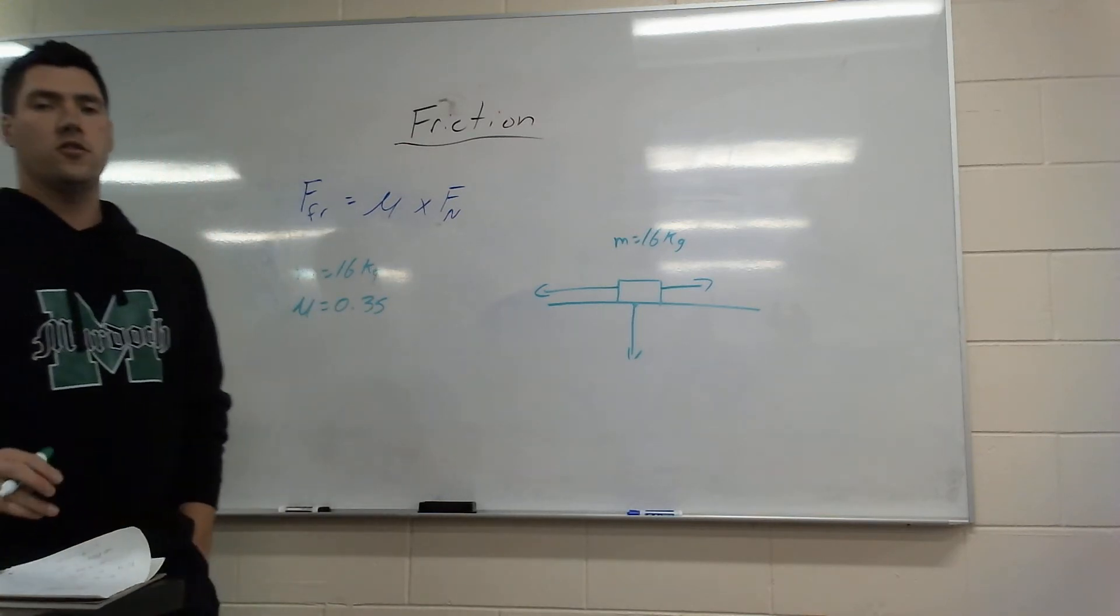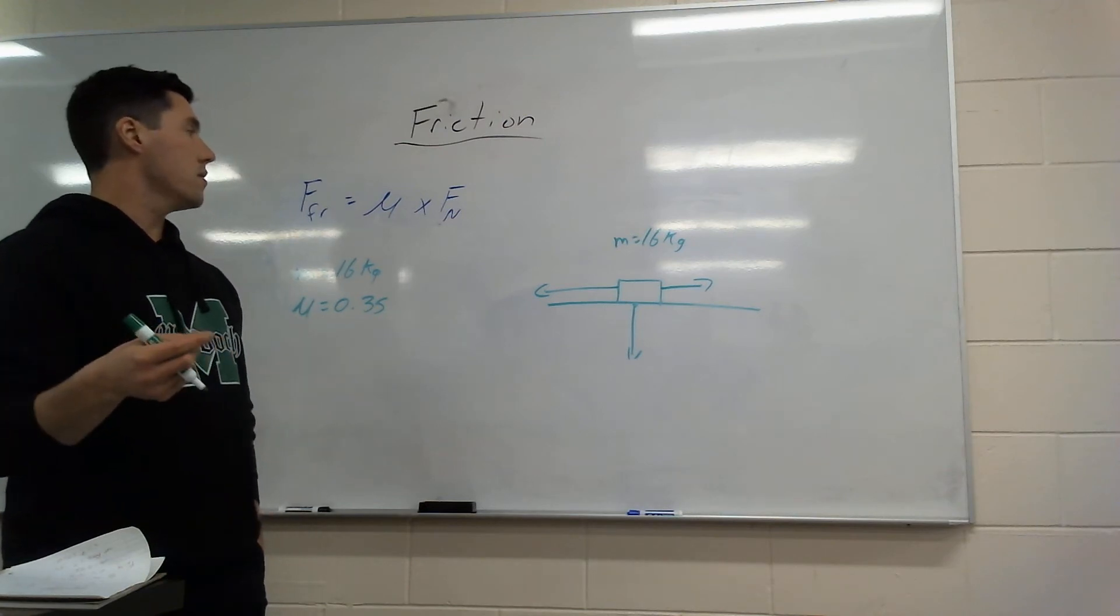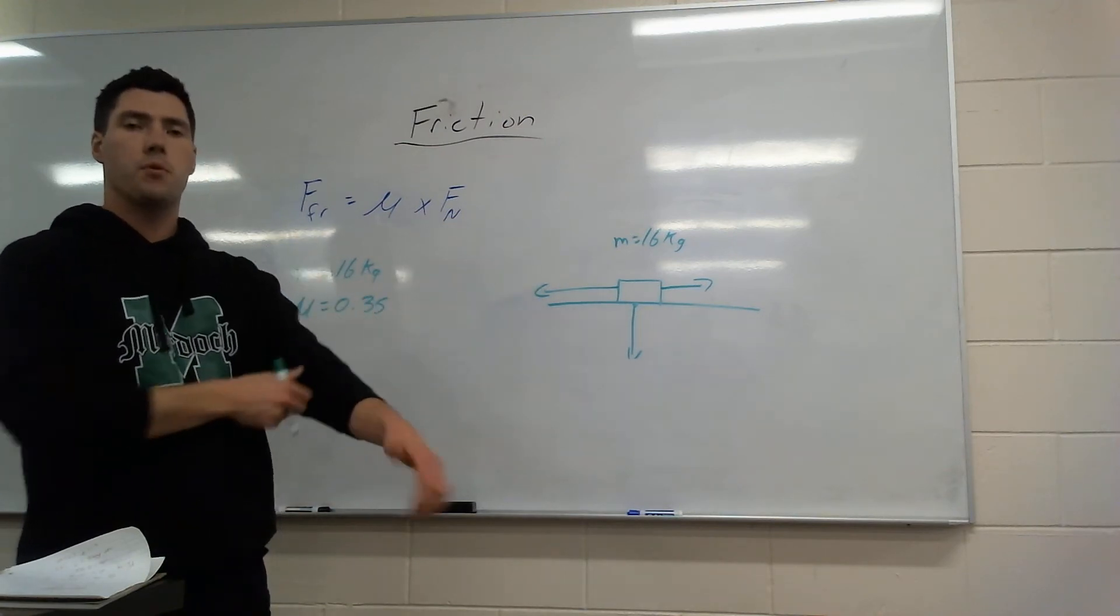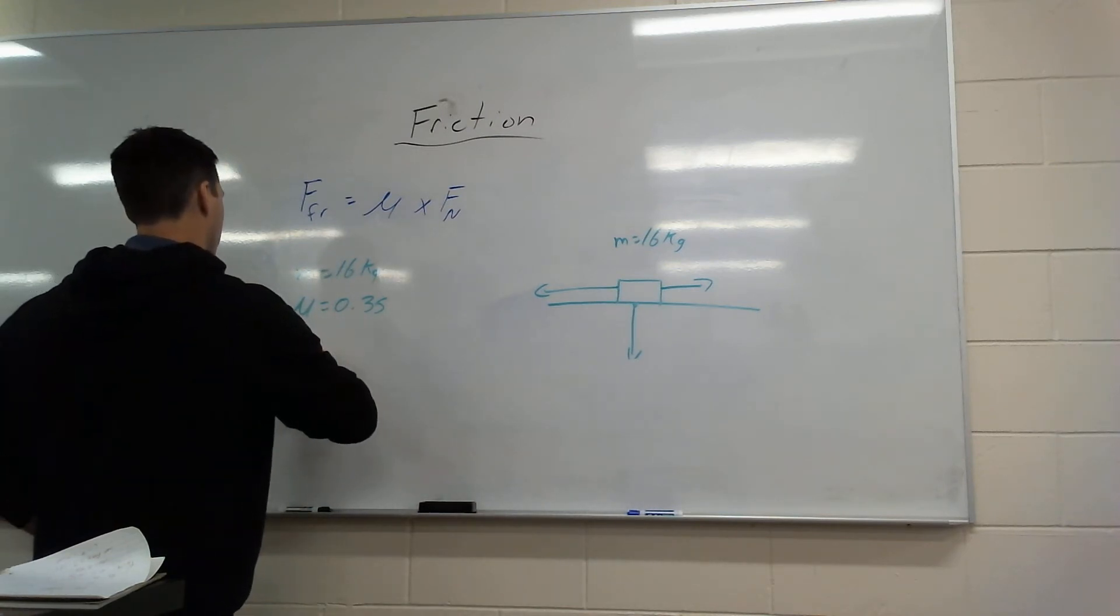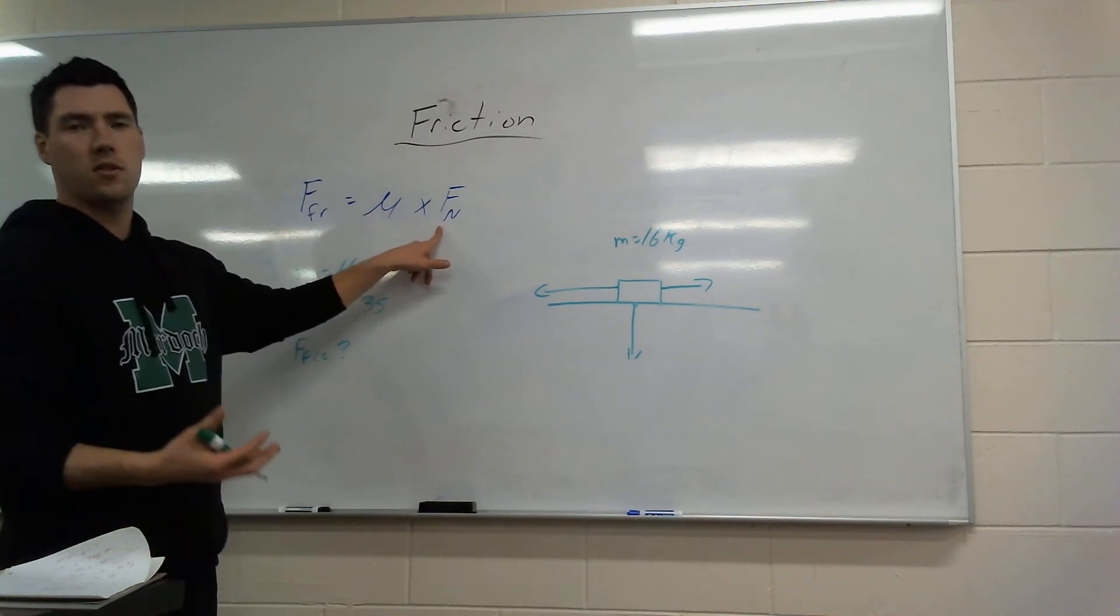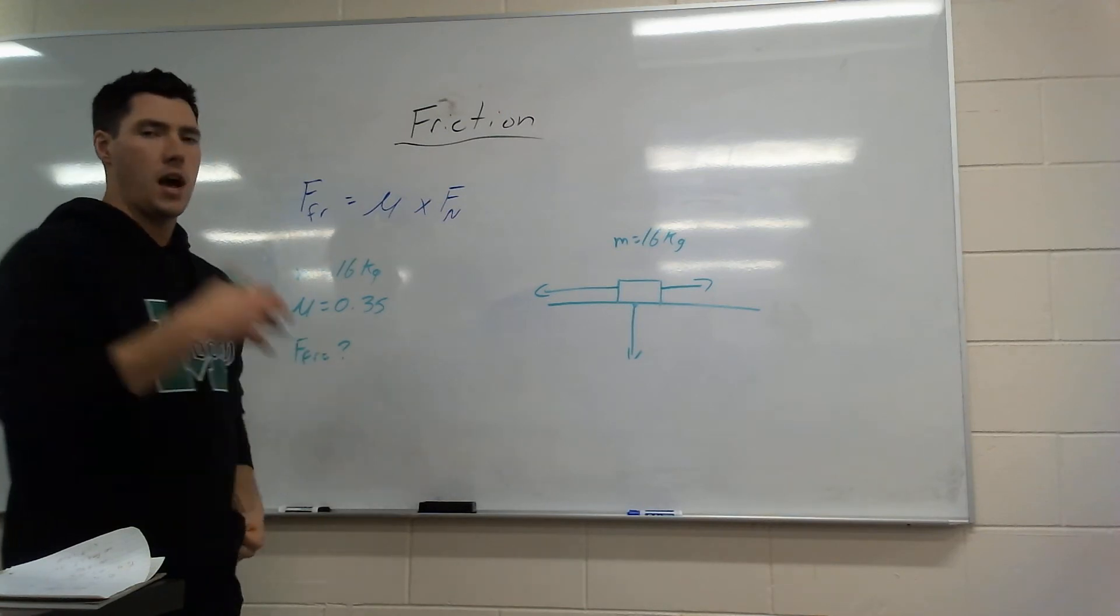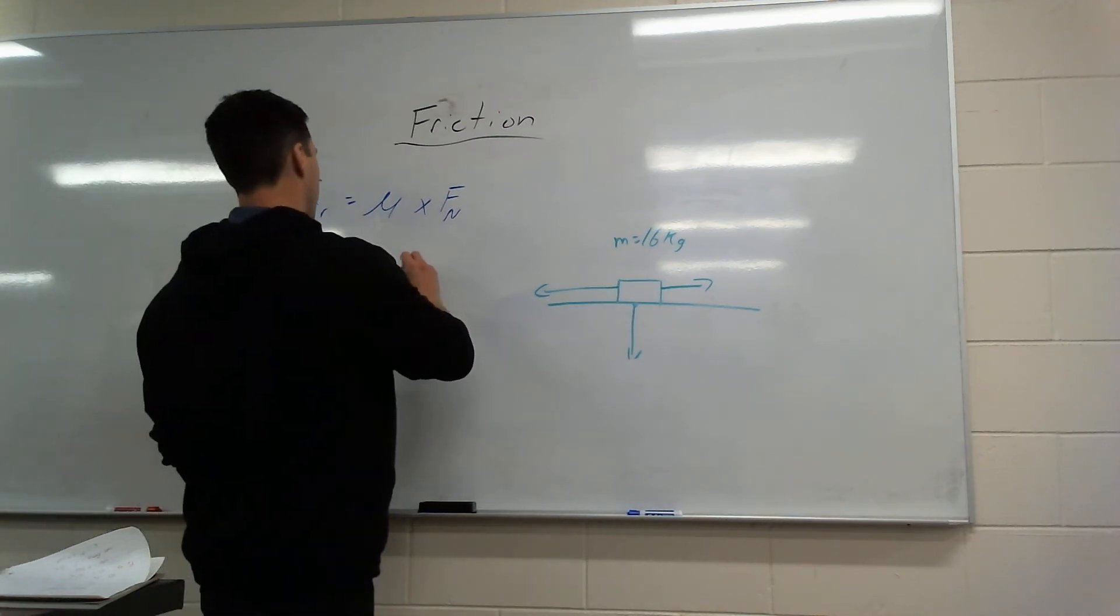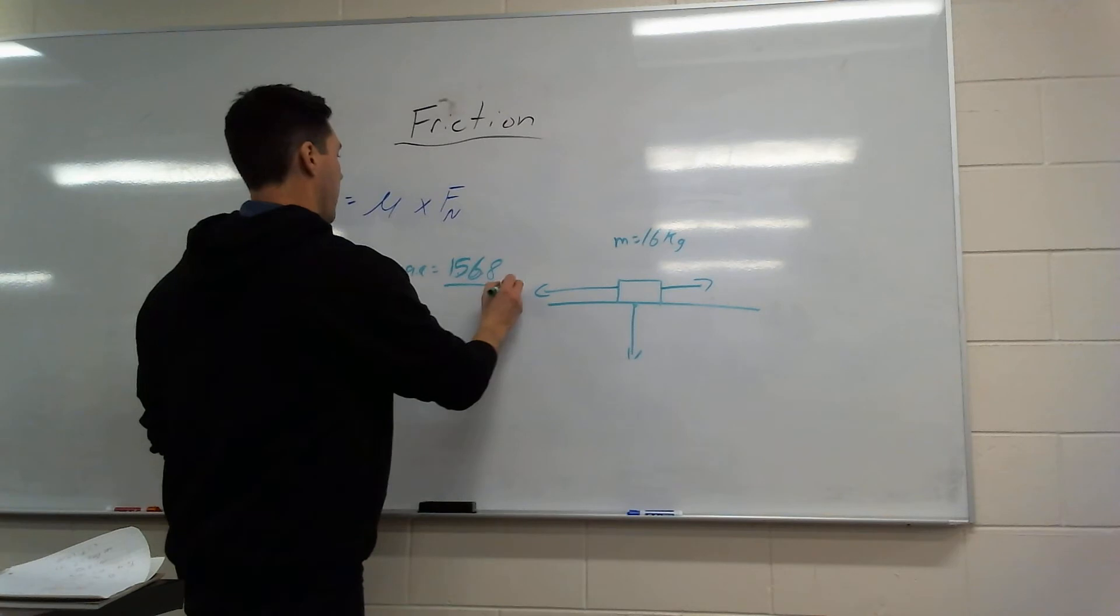And now it's asking, what is the force of friction on this object? So if I was going to start pulling or pushing on this, what would be the force of friction against me? I have mu. I don't have force normal yet, so let's find that. We're just going to take mass, times it by your 9.8. So taking 16 times 9.8, we're going to get 156.8. That is my force normal.